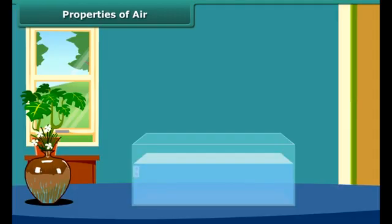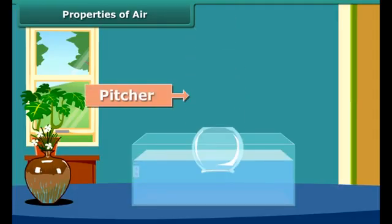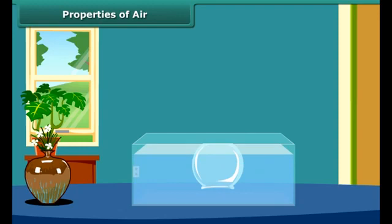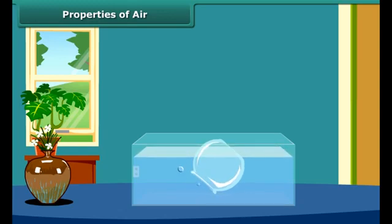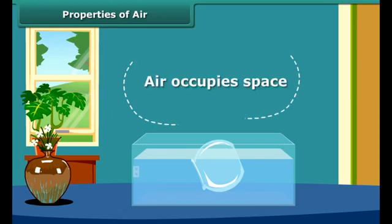To understand this, take a pitcher and dip it straight into the water. No water enters into the pitcher. Now tilt the pitcher slightly. The air bubbles are coming out of the pitcher and water starts entering into it. The pitcher is not empty. Air that was present in the pitcher is coming out. This shows that air occupies space.